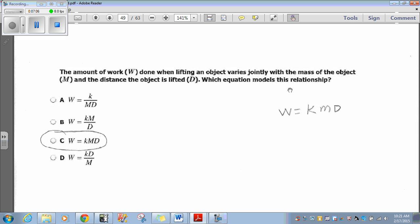You have to remember what the formula for joint variation is. The formula for joint variation is basically Y equals K times X times Z, or two numbers here. In this case, the Y is going to be our W. Our work is equal to K, our constant, times the mass, and the distance the object is lifted. So W equals K M D. That's the only one that works. Everything else here are inverse variations. This is the only one which is joint variation, choice C.